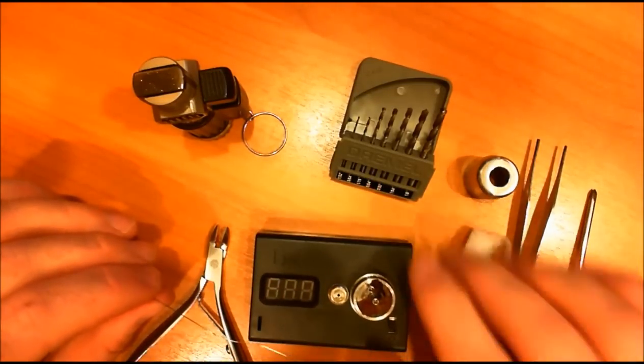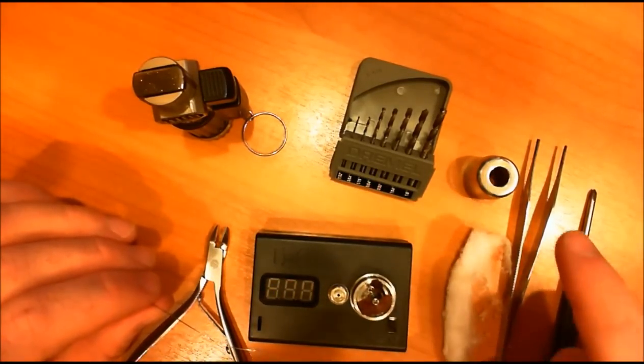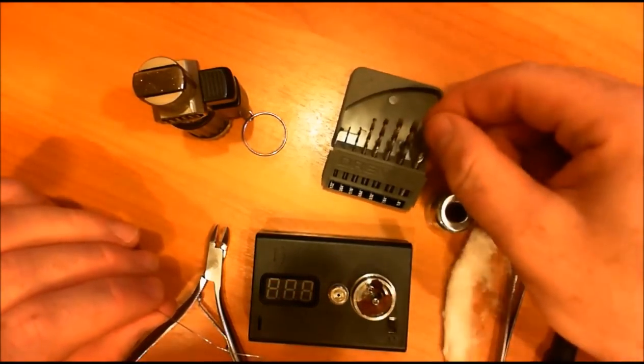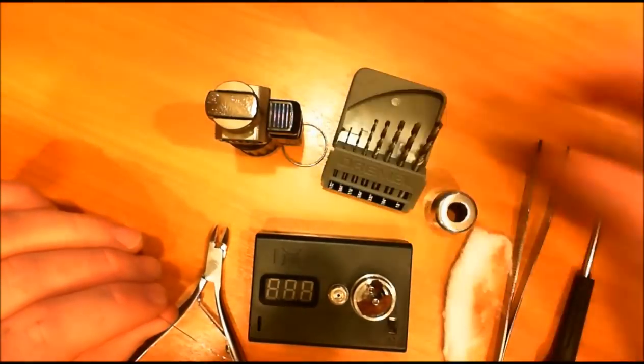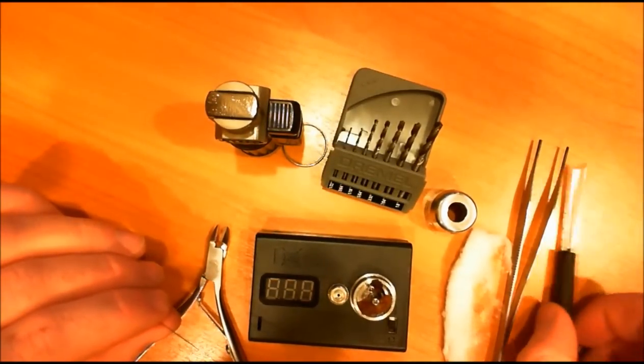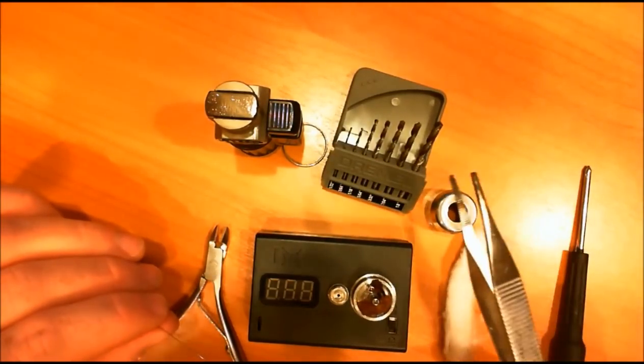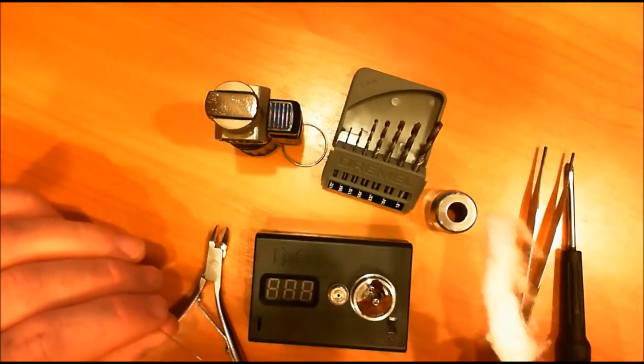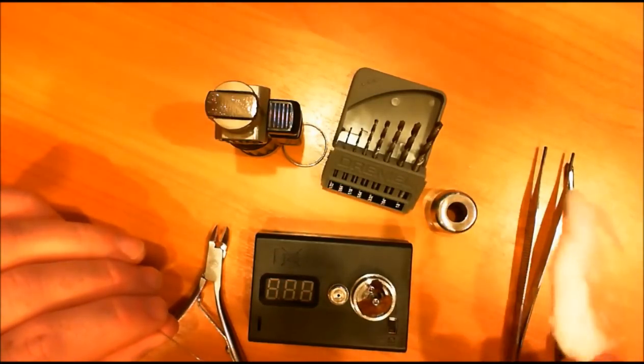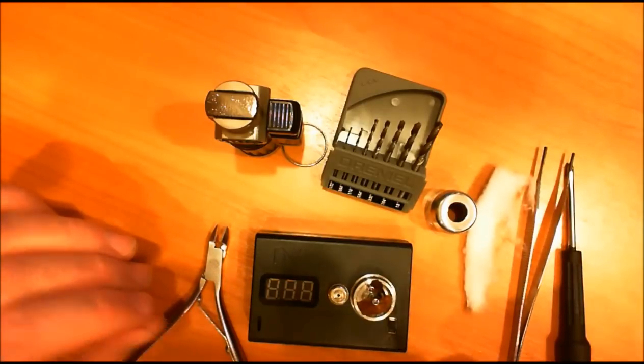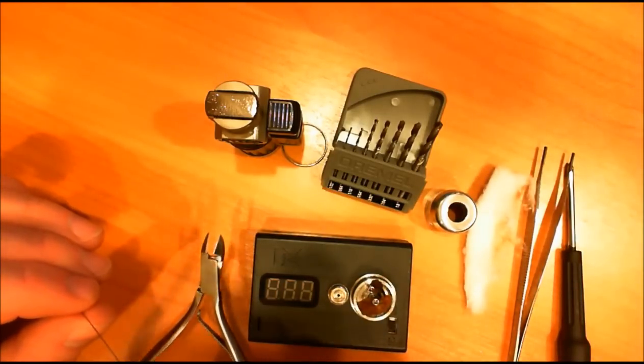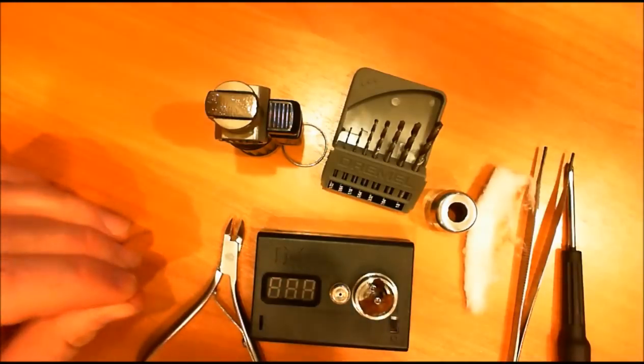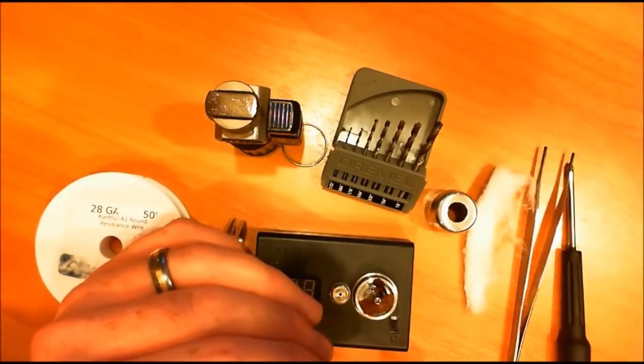So I have the Aigo L base here, the top cap here, some drill bits, a torch, screwdriver for the Aigo, some tweezers so I don't burn myself when I'm torching everything. Some cotton here, just a boiled cotton ball, some clippers, and 28 gauge kanthal.